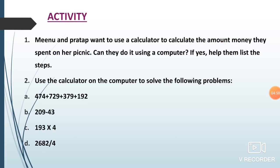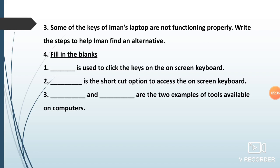Next we can move to the activity. Here you have four questions. First: Minu and Prada want to use a calculator to calculate the amount of money they spent on their picnic. Can they do it using a computer? If yes, help them list the steps. Second: Use the calculator on the computer to solve the following problems. If a laptop or desktop is not available, you can use your mobile phone — it also has a calculator. Third: Some of the keys of Iman's laptop are not functioning properly — write the steps to help Iman find an alternative. Fourth: Fill in the blanks — dash is used to click the keys on the on-screen keyboard; dash is the shortcut option to access the on-screen keyboard; dash and dash are the two examples of tools available on computers.